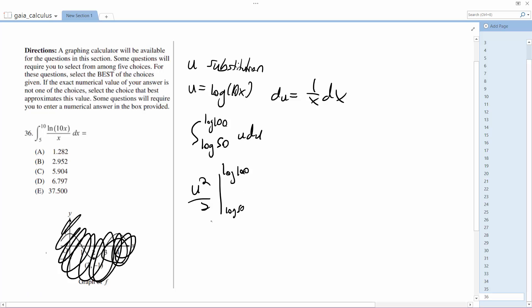What this gives us is equal to 1 half log, quantity log squared 100 minus log squared 50.